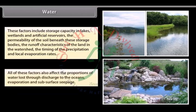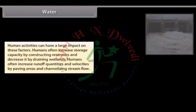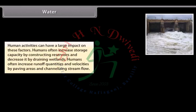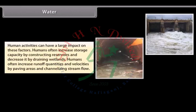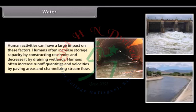All of these factors affect the proportions of water lost through discharge to the oceans, evaporation and subsurface seepage. Human activities can have a large impact on these factors. Humans often increase storage capacity by constructing reservoirs and decrease it by draining wetlands. Humans also increase runoff quantities and velocities by paving areas and channelizing stream flow.